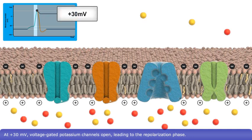At plus 30 millivolts, voltage-gated potassium channels open, leading to the repolarization phase.